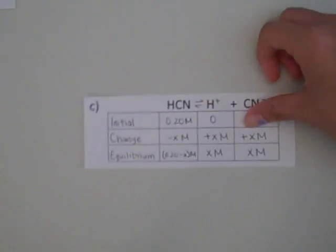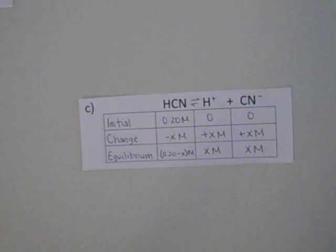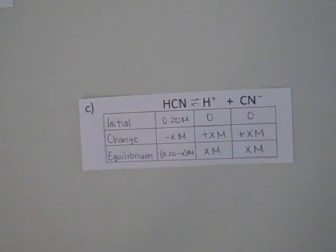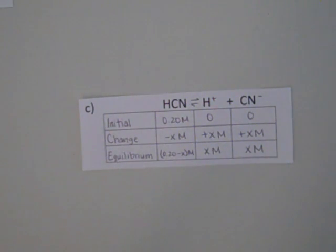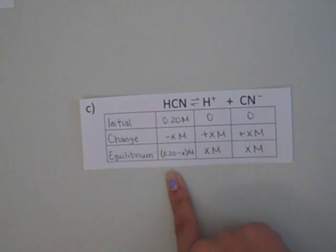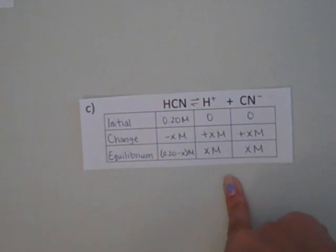Then we would make an ICE table. Initially, we had 0.20 molar of HCN and 0 molar of hydrogen and cyanide. The change is minus X for the reactants and plus X for the products. So at equilibrium, the concentration of HCN is 0.20 minus X molar, while the concentration of hydrogen and cyanide at equilibrium is X molar.